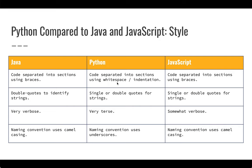In Java, you use only double quotes to identify strings. In Python, you can use single or double quotes for strings, which allows you to insert apostrophes where you need to, and you still have escape characters as necessary. Java is a very verbose language; Python is a very terse language. And in Java, the naming convention uses camel casing, where you have capital letters with all words together. In Python, your naming conventions typically use underscores.